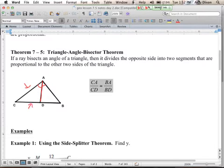And then we do BA is to DB. So that's the triangle angle bisector theorem. The key thing there is that you have to have an angle bisector to make this proportion work.